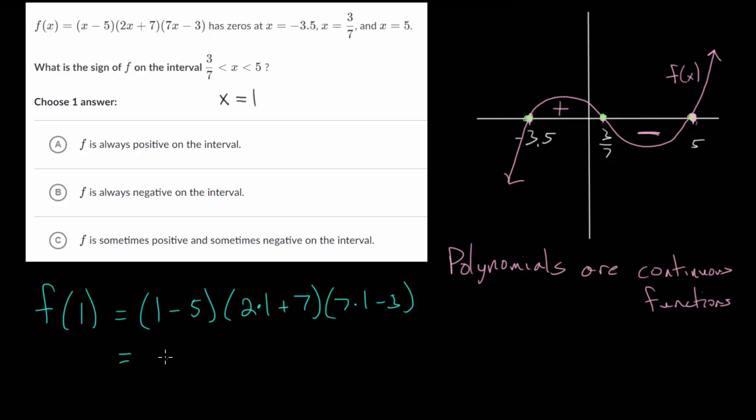So 1 - 5 that's -4 and we have 2 times 1 + 7, so 2 + 7 which is 9. And 7 times 1 is 7 minus 3 is 4. So you get 36 multiplied by -4 which is -144.